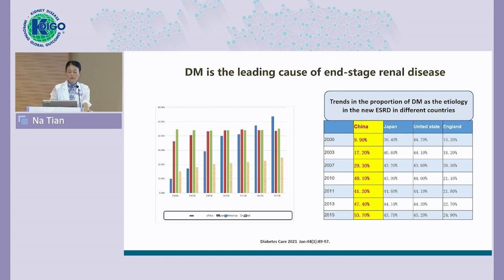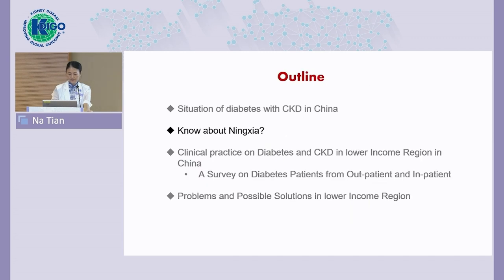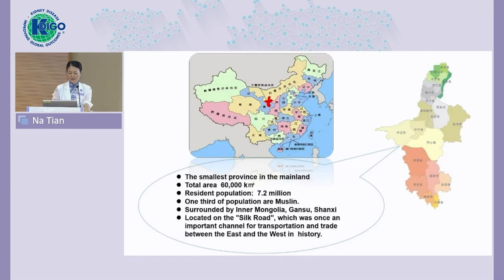From the previous slides, we can see that the burden of diabetes with CKD patients in China is very heavy. Next, I want to talk about my hometown — Ningxia province, which I think most of you have not heard of. It is located in the northwest of China and is the smallest province in the mainland.